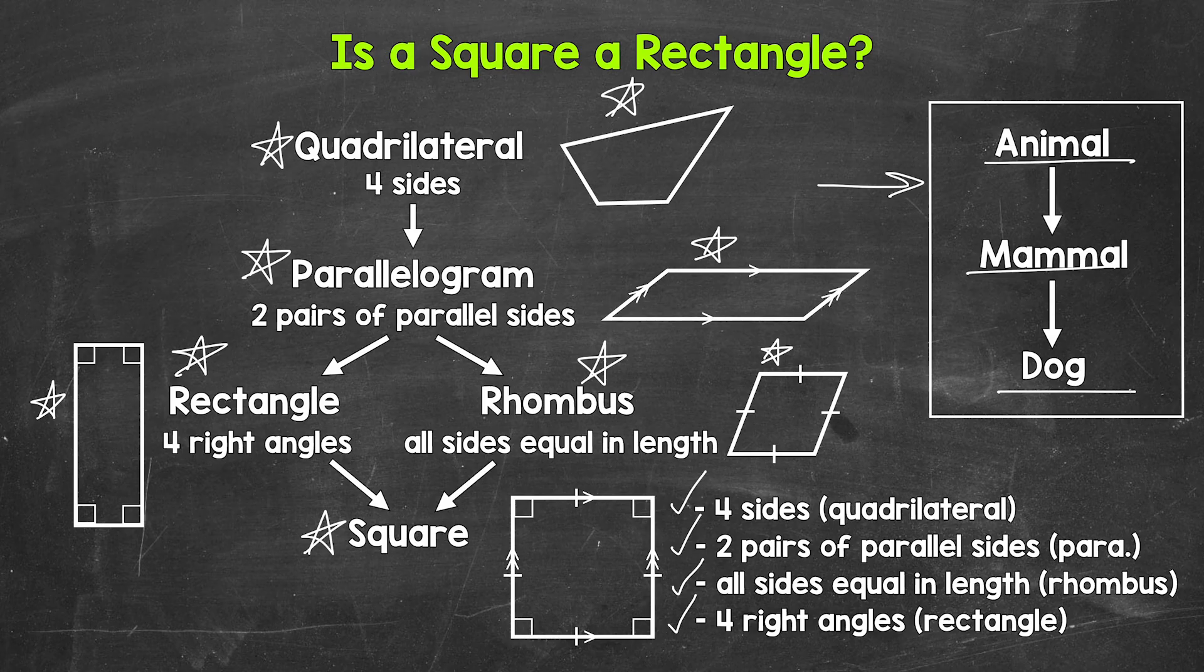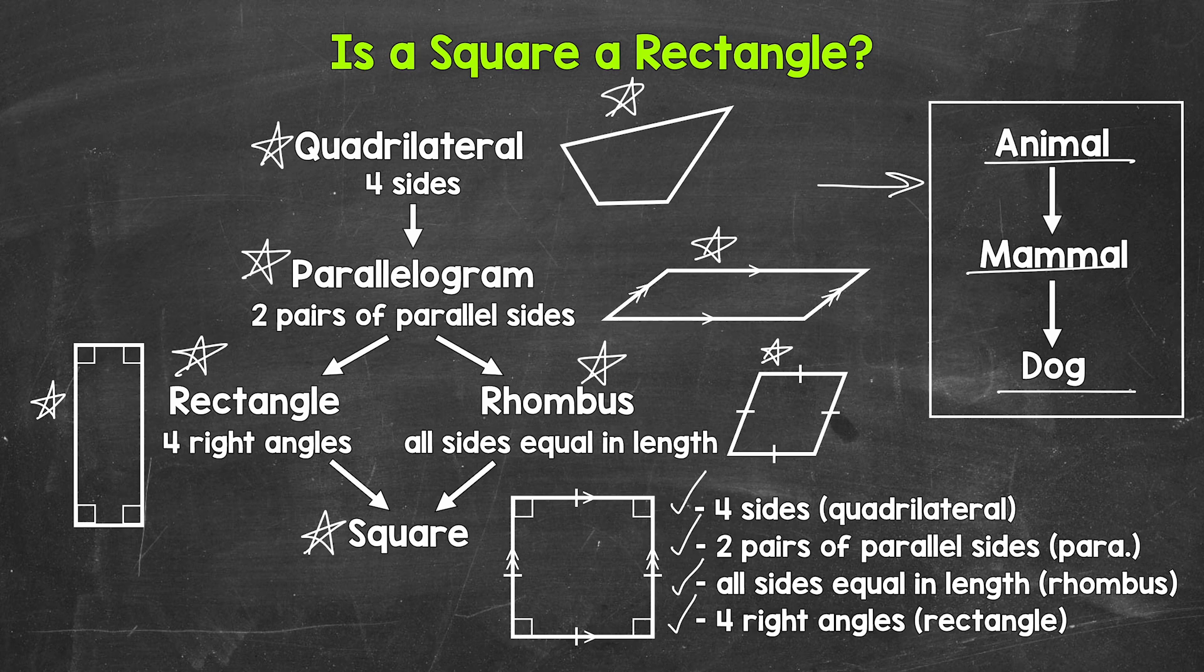Now, I know that's not an apples to apples comparison with our quadrilateral chart. But it can help us think through how, yes, a square is a rectangle. Just like, yes, a dog is a mammal. So there you have it. There's an explanation of how a square is a rectangle.